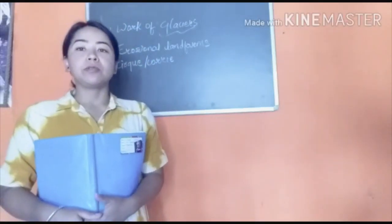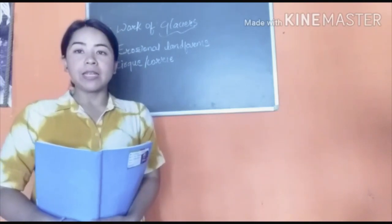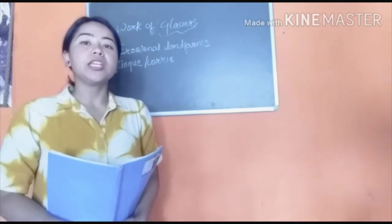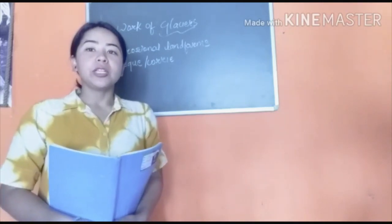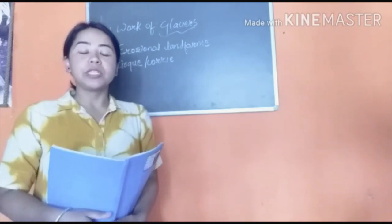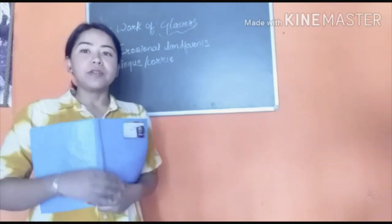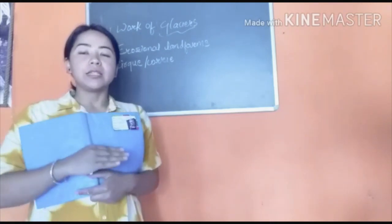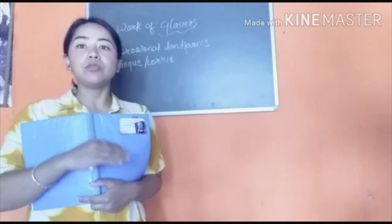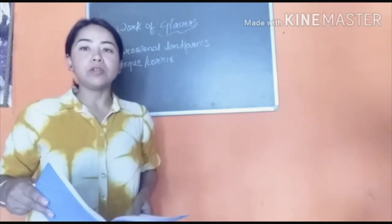Glaciers erode their valley in two ways: plucking and abrasion. Plucking is a process by which the glacier breaks and pulls the rock that is present in its way. In abrasion, the surface of the glacier wears away the surface which comes into its contact while moving. These are the two processes through which a glacier does the work of erosion.